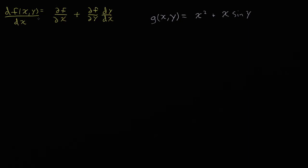So up here I've written the rule for how to take the full derivative of a function of two variables with respect to one of the variables. And this looks a little bit complicated — it has several derivatives in it. Some of them are curly d's, some of them are full d's, but really it says something pretty simple.